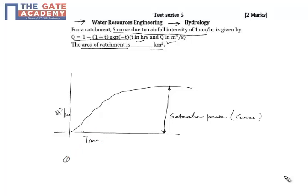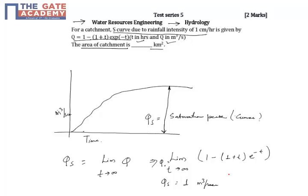So Q_s, that is Q_s, would be limiting t tends to infinity Q. So it would be limiting t tends to infinity 1 - (1 + t)e^(-t). So Q_s is equal to 1 meter cube per second. Now rainfall intensity.